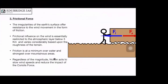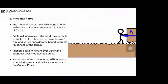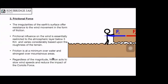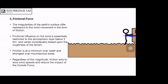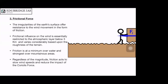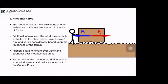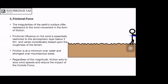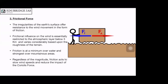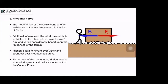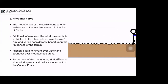Now let us look at the force of friction. The surface of the earth is not smooth, and as the wind blows, it is subject to frictional force as it encounters surface features such as mountains, hills, buildings, and trees. The frictional influence on wind is essentially restricted to the atmospheric layer below 3 km and varies considerably based on the roughness of terrain. Friction is minimal over water surfaces like oceans and grasslands, and strongest over mountains. Regardless of magnitude, friction acts to slow down wind speed.